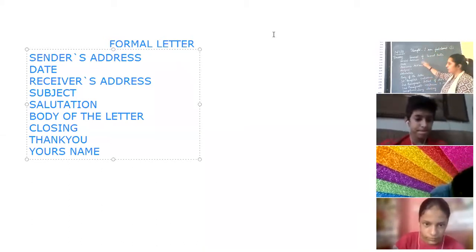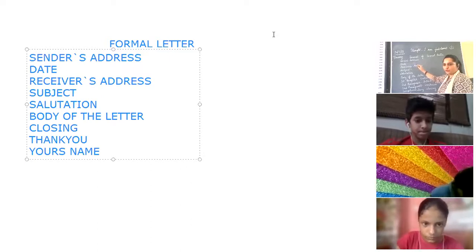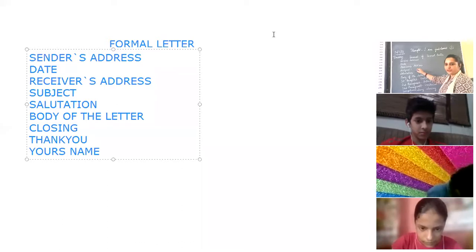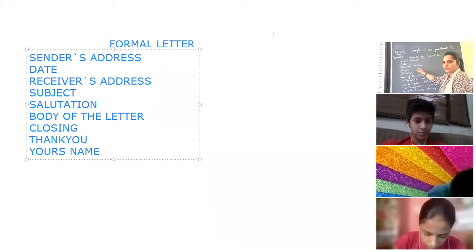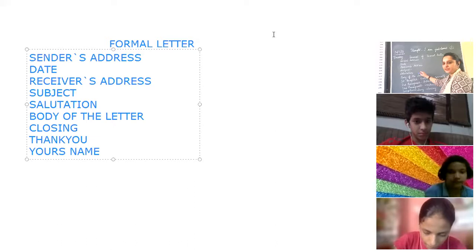Then you put the date, so that the receiver will know when you wrote the letter. After that, you write the receiver's address — to whom you are writing. Then comes the subject: what is the reason you are writing the letter. For example, 'Application for Sick Leave.'